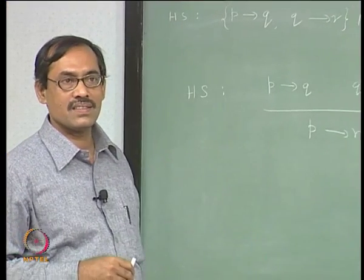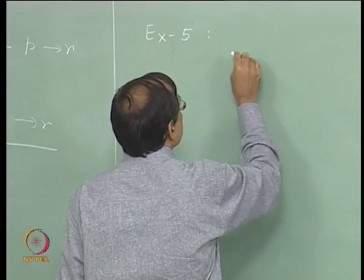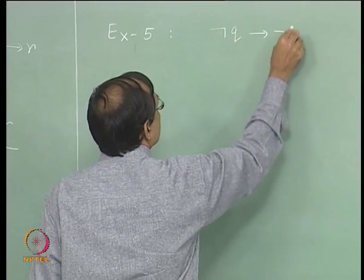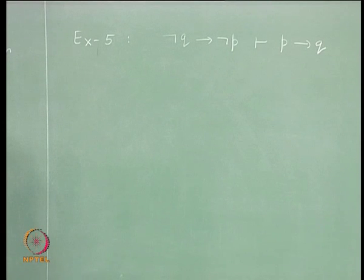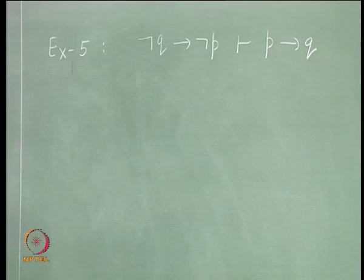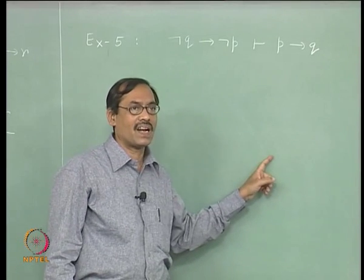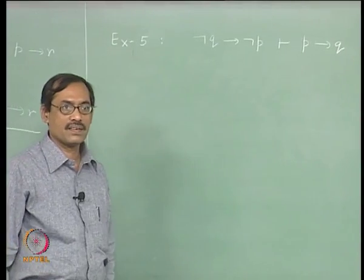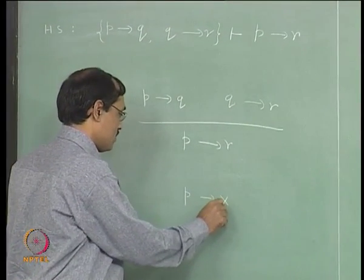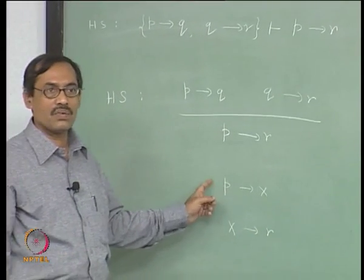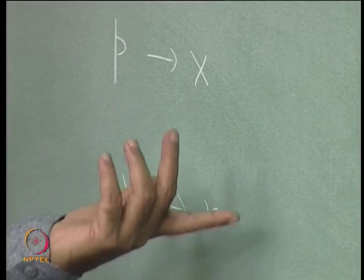Let us try to prove something using HS as a derived inference rule. Suppose we have: not q implies not p, entails p implies q. Let us try a proof of this, probably using HS. If you want to use HS, we want to conclude p implies q. That means p implies something — say x — and x implies q. We want to derive this using HS, so before that step, somewhere we would be obtaining p implies x and then x implies q. Use HS and conclude p implies q.